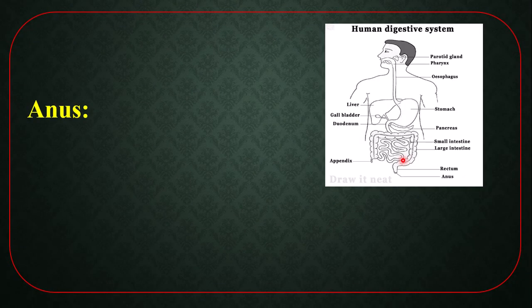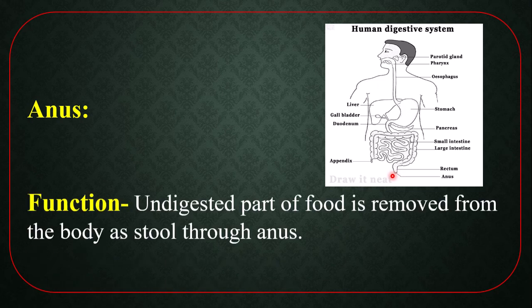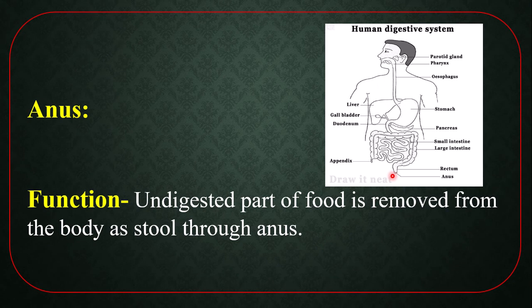Anus. The last portion of our digestive canal is anus. Anus is the last part of the digestive system. The digestive canal opens outside through this part. Function: the undigested part of food is removed from the body as stool through the anus.